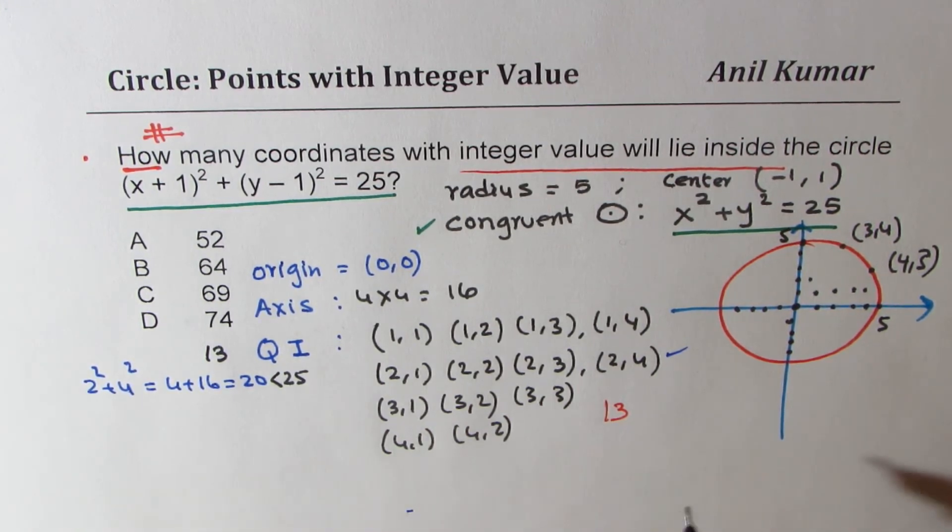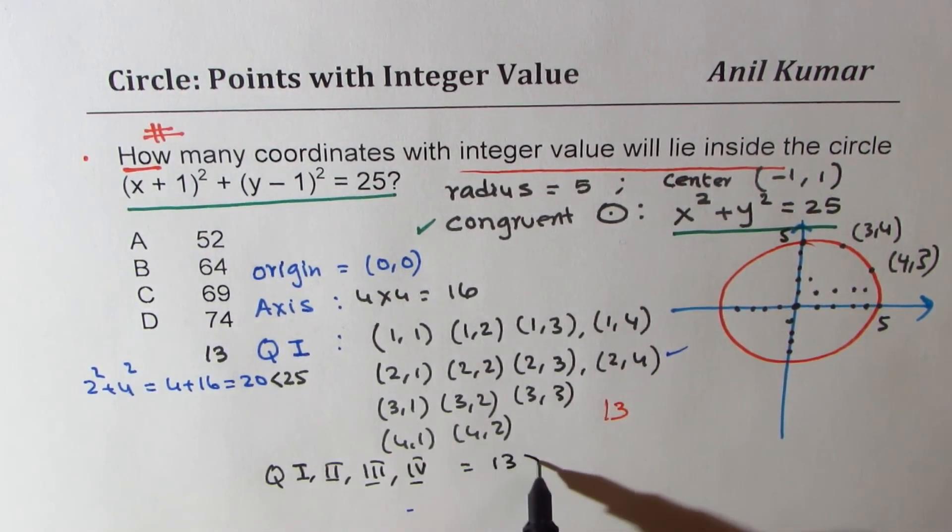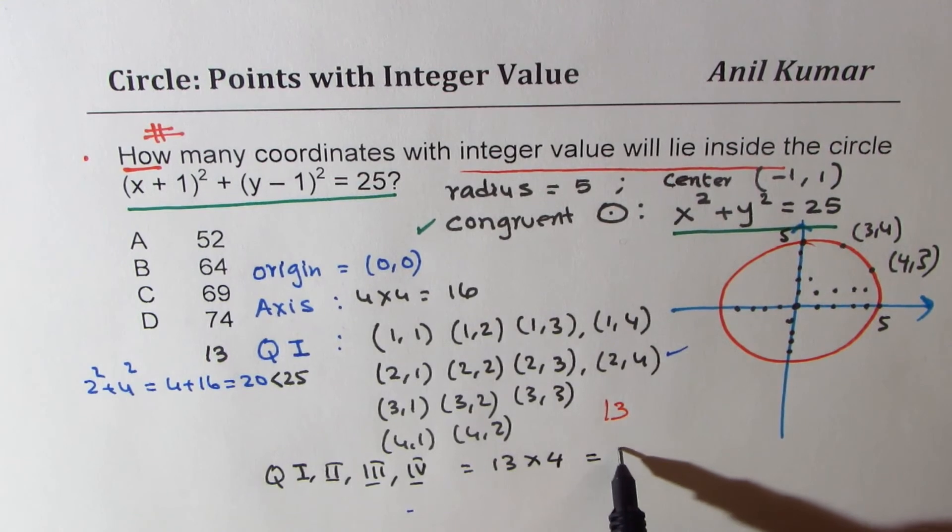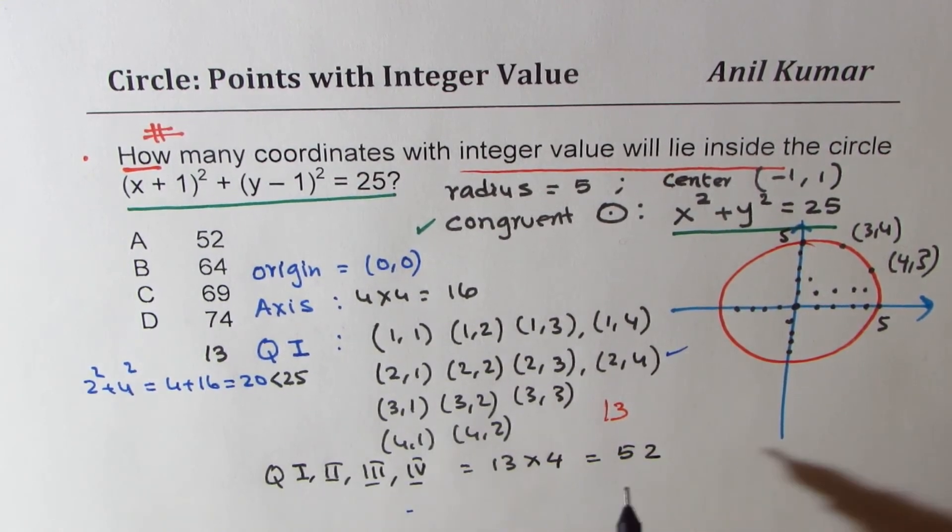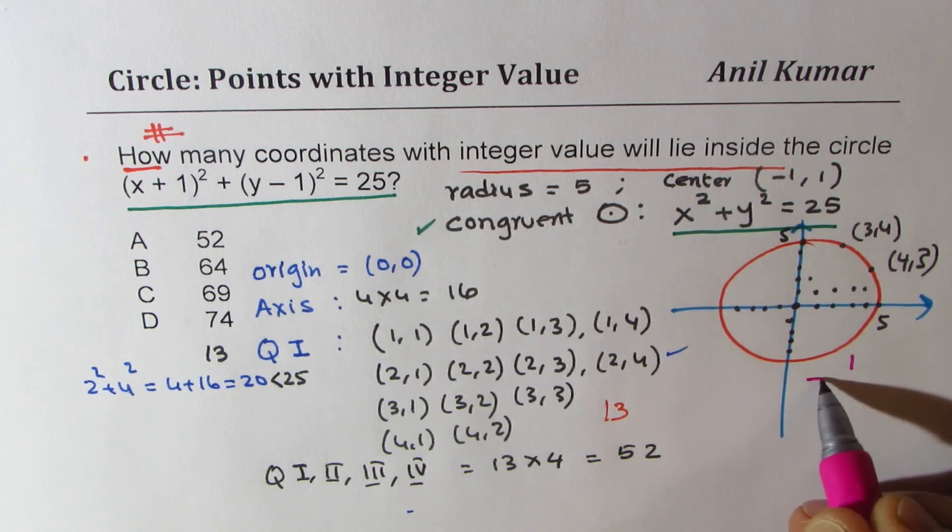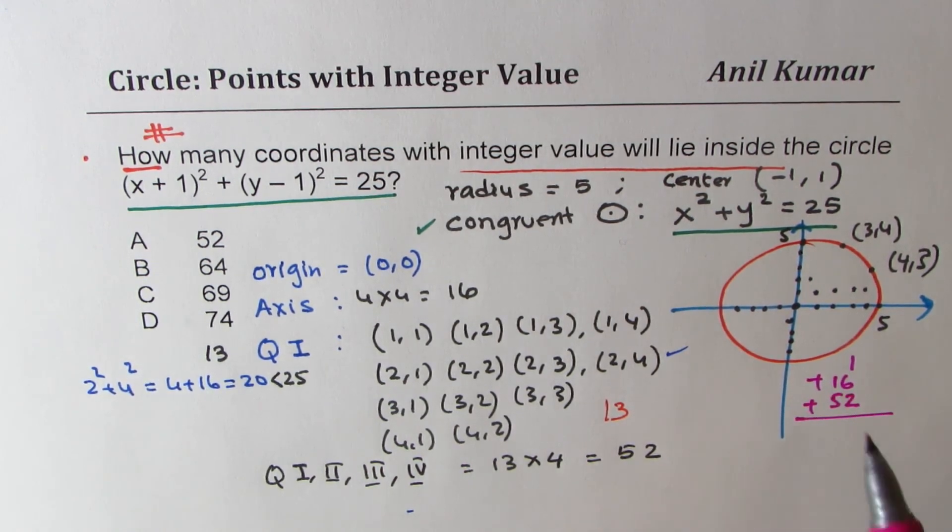So that means now in quadrant 1, in quadrant 2, in quadrant 3, and in quadrant 4, we should have 13 times 4, which is a deck of cards, 52. So now we have all our points. So the total sum indeed is 1 + 16 + 52.